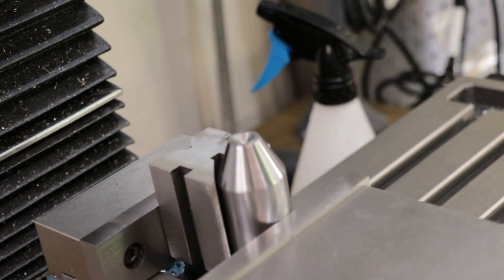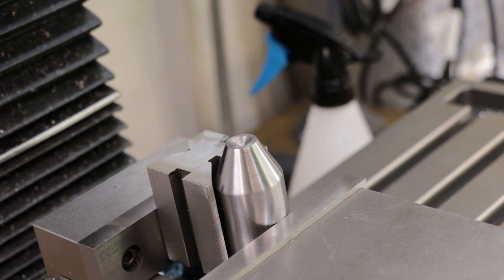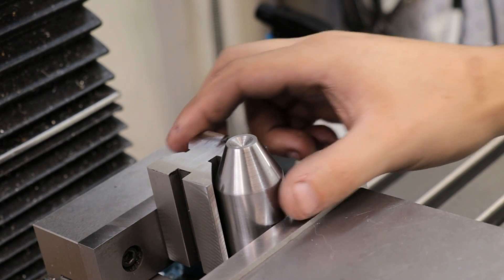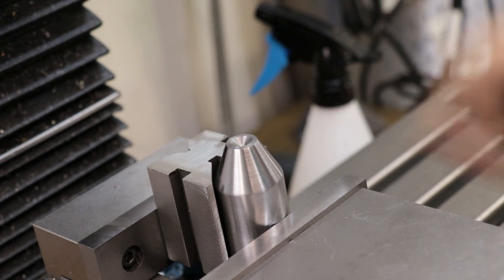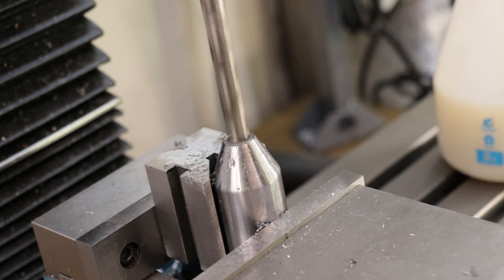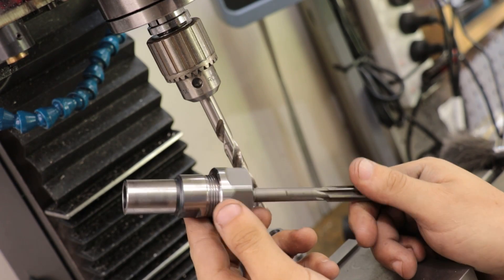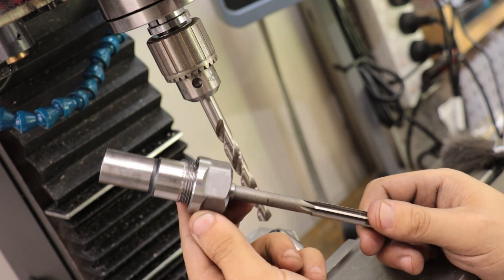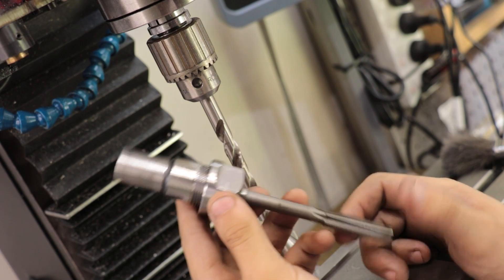I've set the part up in the mill to cut the hole which probably sounds a bit counterintuitive since it already was set up in the lathe. But I'm going to be reaming the hole and the lathe runs a little bit too fast to run these cutters.